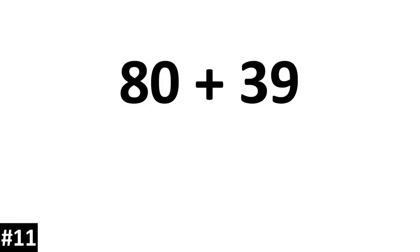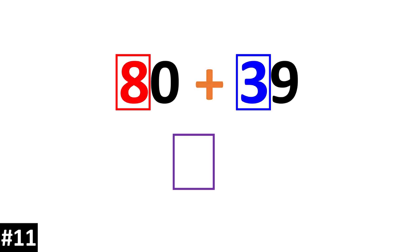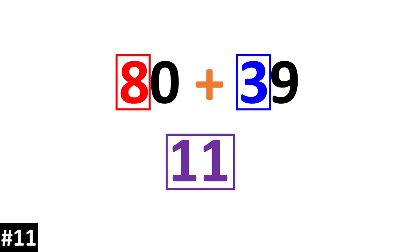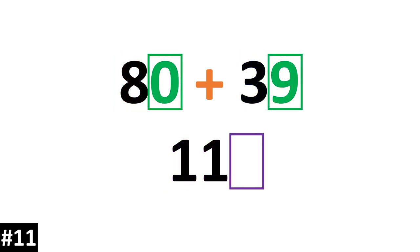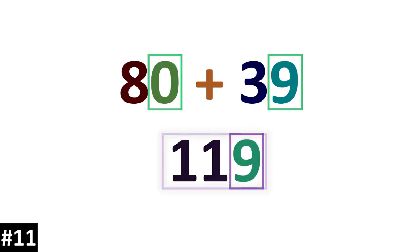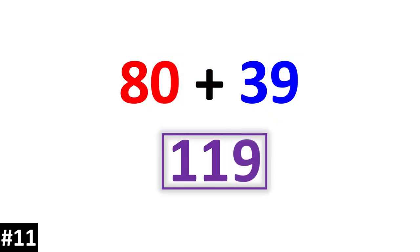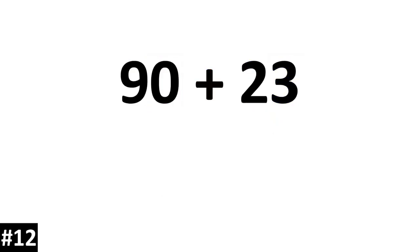80 plus 39. 8 tens plus 3 tens gives us 11 tens. Then we add the ones: 9. The answer is 119.